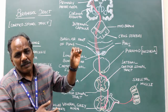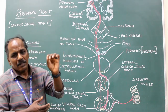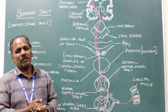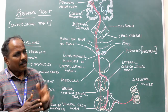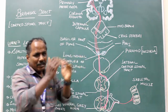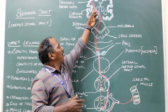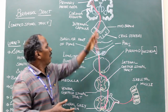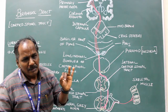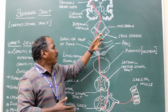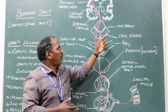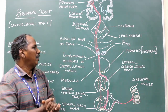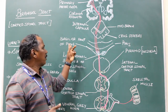It also receives fibers from the associated motor area and from the sensory areas. These fibers converge and descend through the corona radiata, the posterior limb of the internal capsule, and three-fifths of the crus cerebri of the midbrain.